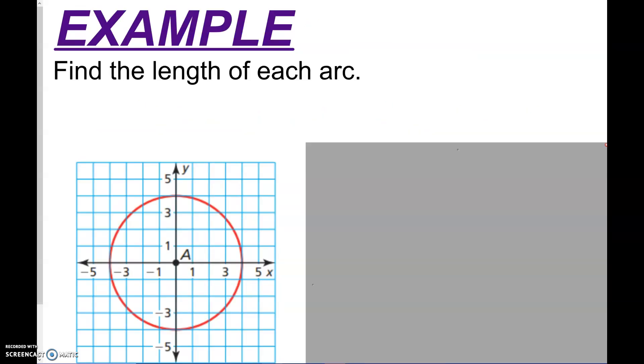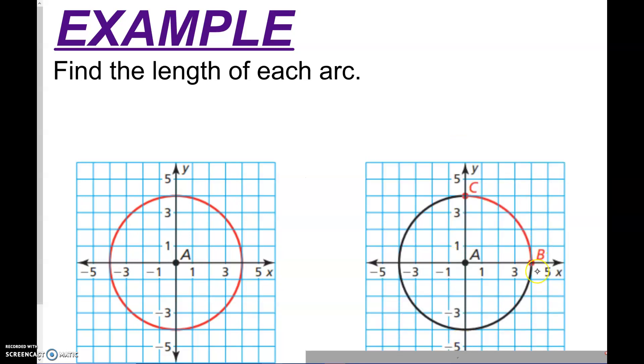So find the length of each arc. Well, this arc, you guys can't really see it. If I show you this other picture over here, you can see that this arc is only from C to B. But in this one, they want the red one, so they want the whole arc, which is the circumference of the circle.